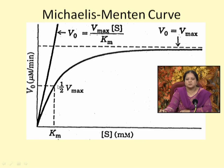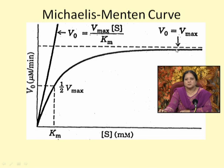Recalling the reaction orders from part 1: at the initial phase of the substrate saturation curve it is a first-order reaction, and at the later part it becomes zero-order — meaning it becomes independent of substrate concentration. Even if we increase substrate concentration, it brings about no effect on velocity.